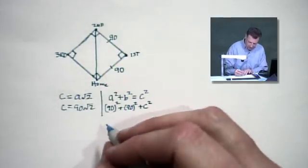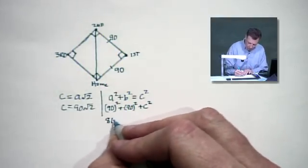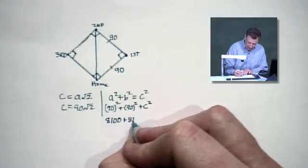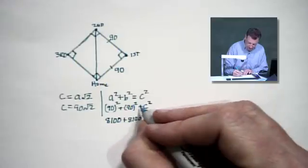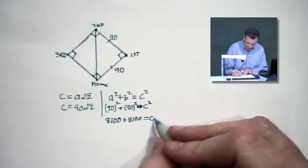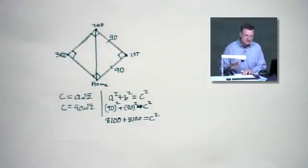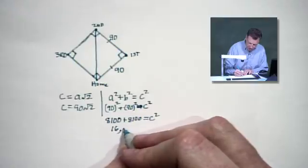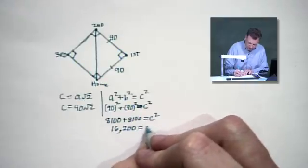That's a lot of numbering here, folks. That's 8,100 plus 8,100, and it equals C squared. Thank goodness we don't want to add anything else to that. So we've got 8,100 basically doubling it there. So that's 16,200 equals C squared.